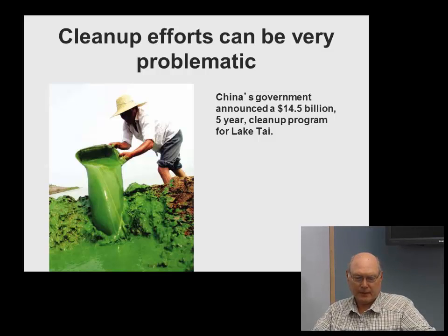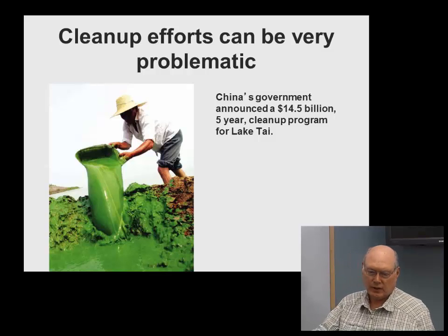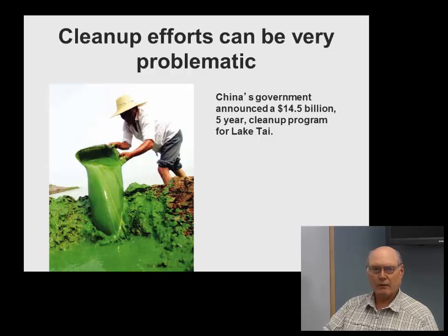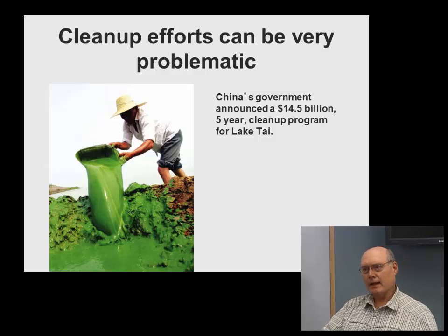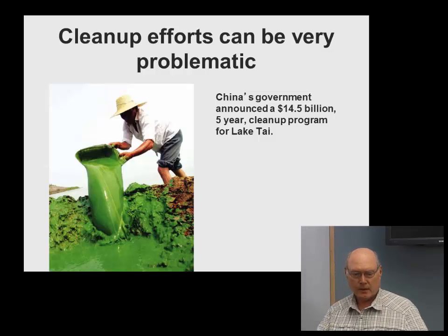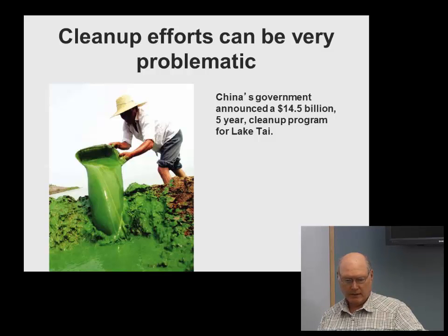At a World Lakes Conference in China about five or six years ago, the Minister of Environment gave an opening address saying that China was not worried about the environment — they were focused on economic development. They pointed to what Europe did with air pollution and the U.S. has done with water pollution, saying when it gets bad enough they'll just spend money and fix it. You can see the consequences of that approach in China's air and water pollution today.